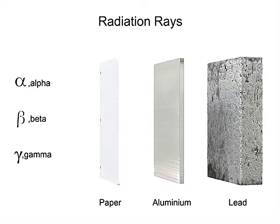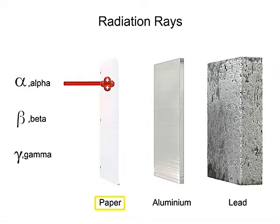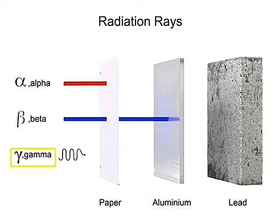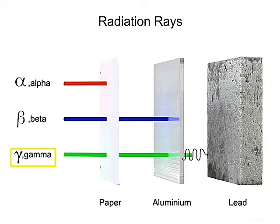The unique characteristics of these three types of radiation affect their capacity to penetrate various materials. Whereas an alpha particle is stopped by a sheet of paper, a beta particle easily passes through paper but is stopped by aluminum. A gamma ray is not impeded by the paper nor aluminum, but its progress can be stopped by lead.